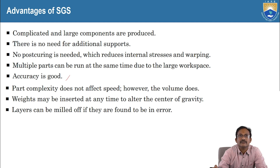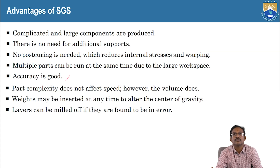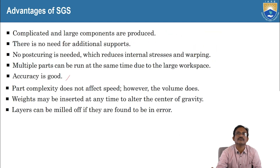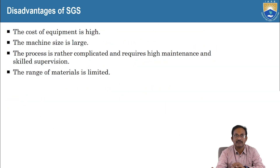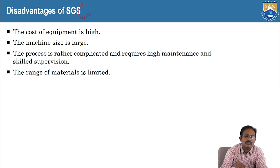Layers can be milled off if they are found to be in error. Disadvantages of SGC — Solid Ground Curing: the cost of equipment is high; the machine size is large; the process is rather complicated and requires high maintenance and skilled supervision; and the range of materials is limited.